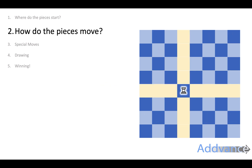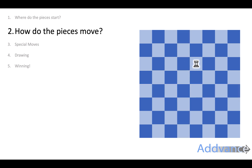Now let's look at rooks, or castles. Castles can move forwards or backwards, left or right, in straight lines. It can move like this, and if there's a piece of the other colour in its way, it can take that piece. And that piece gets taken off the board.